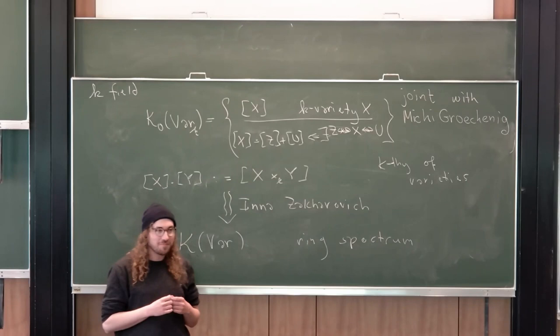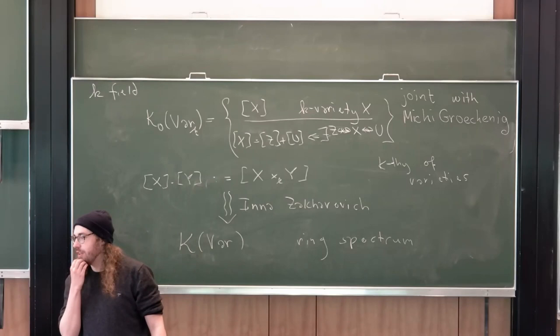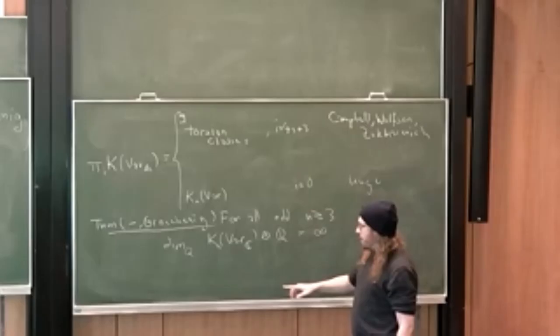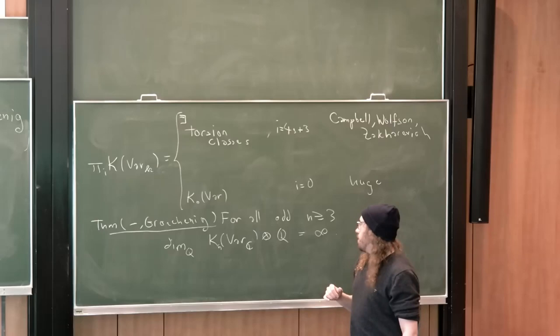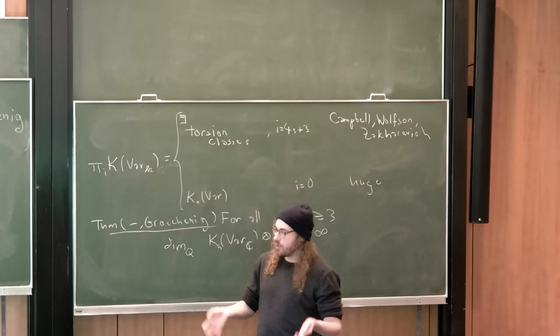Regarding the question about rational-dimensional things and finite fields: we have the same result over F̄_p as well. The infiniteness is not related to the rational K-theory of ℂ being huge. The base field doesn't matter so much — you just need to construct your varieties over a certain field, and it's useful to have that field be large, but the K-theory of that field doesn't really play a role.